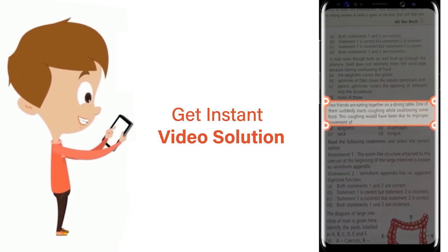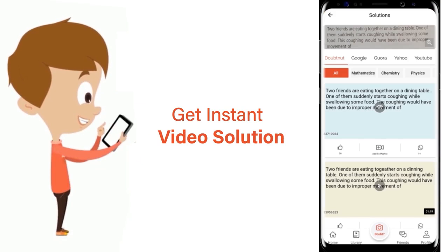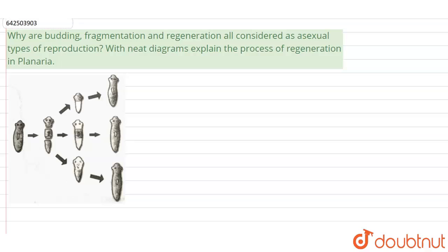In this question they are asking us why the processes such as budding, fragmentation and regeneration are considered as asexual type of reproduction, and also we have to explain the process of regeneration in planaria with the help of diagrams.